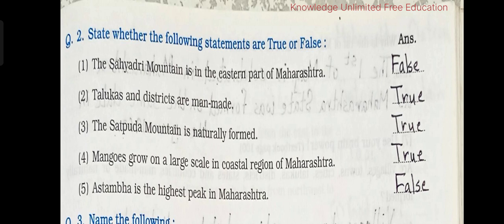3. The Satpura mountain is naturally formed — the answer is true. 4. Mangoes grow on a large scale in the coastal region of Maharashtra — the answer is true. 5. Astambha is the highest peak in Maharashtra — the answer is false.